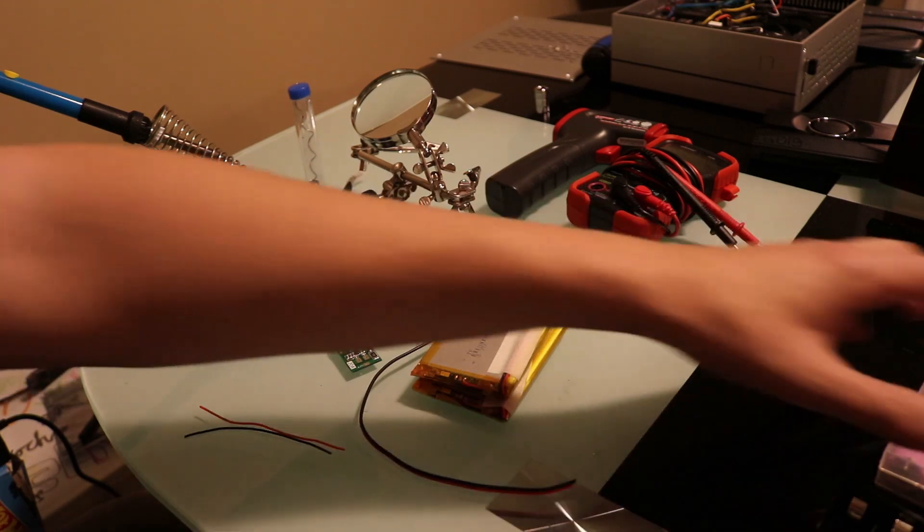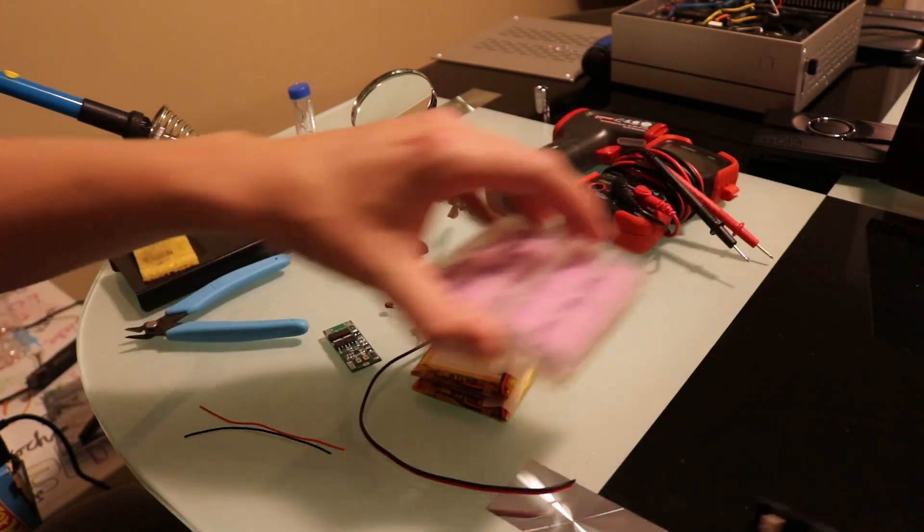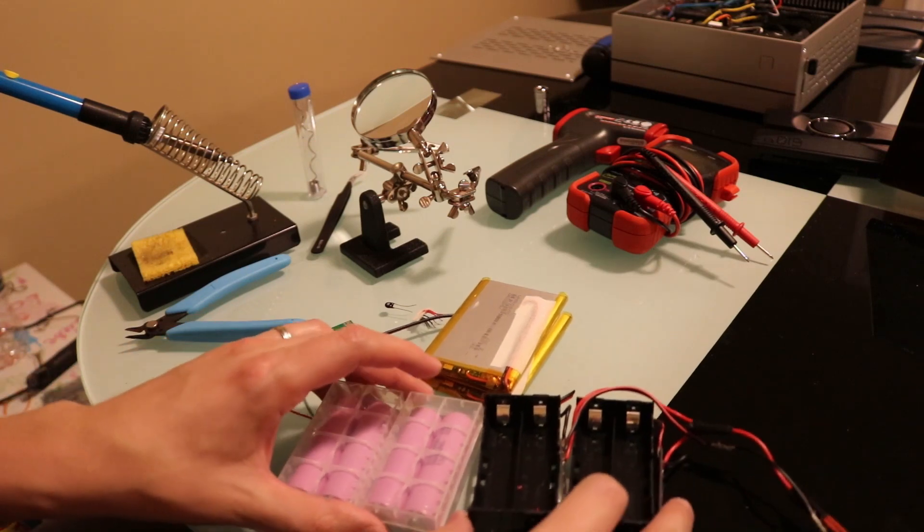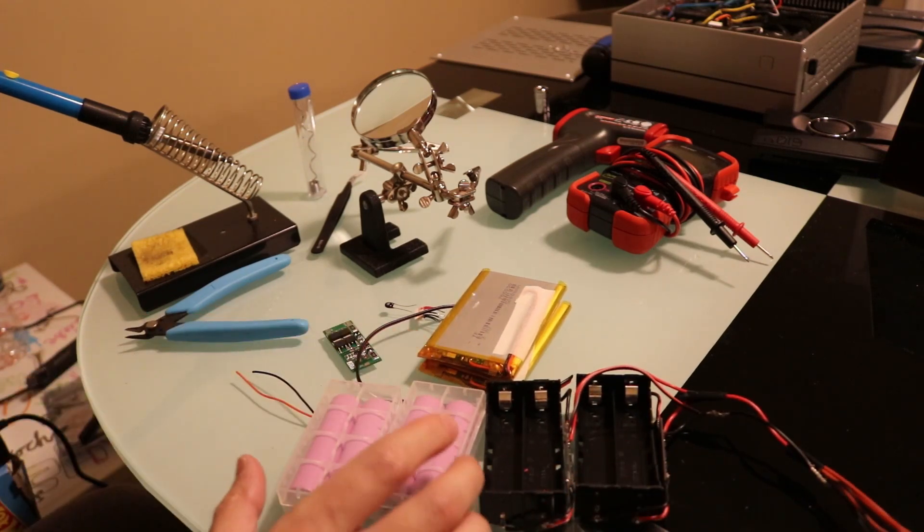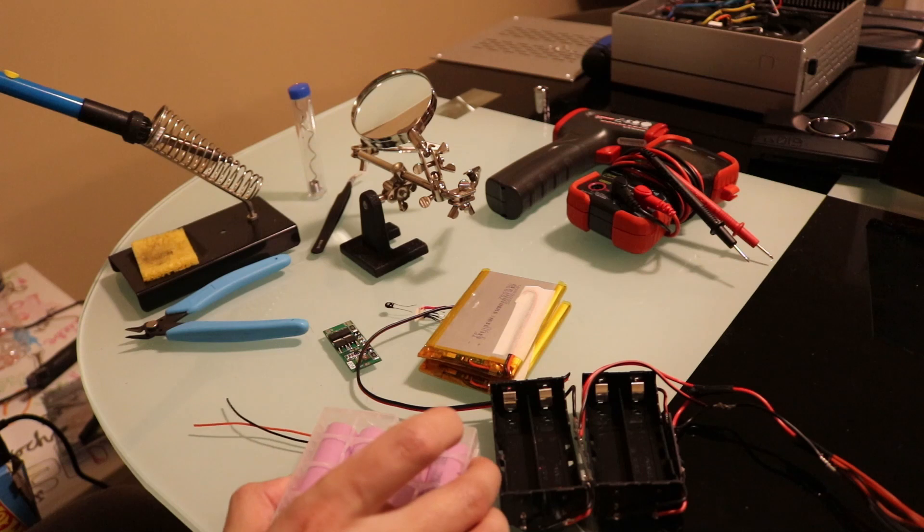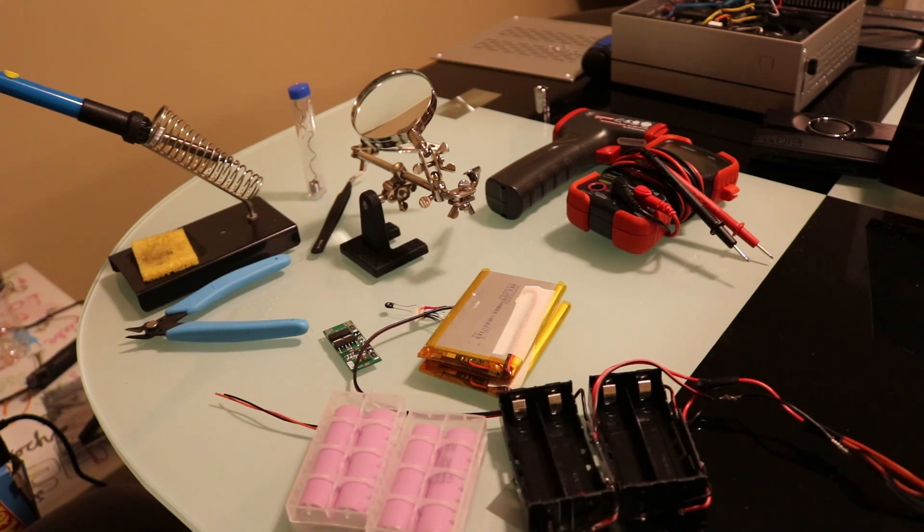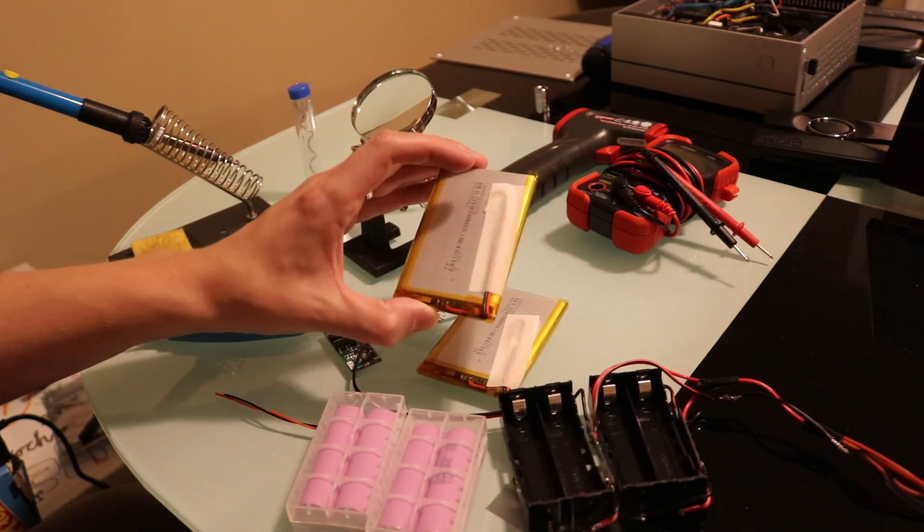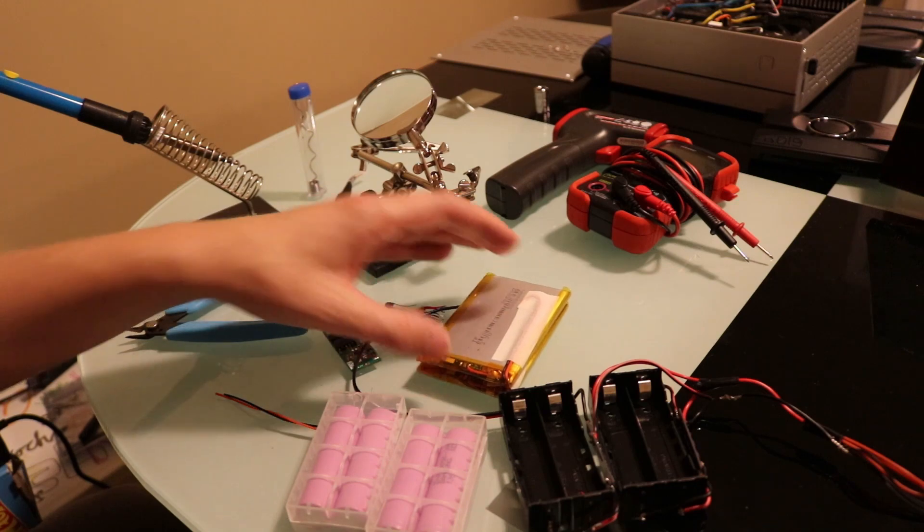Now if you remember in a previous video, I actually made an 18650 battery pack for the Latte Panda Alpha and it worked quite well. However, the batteries and the packs themselves were a little bit bulky. With these LiPo battery packs, we should be able to slim it down quite a bit.